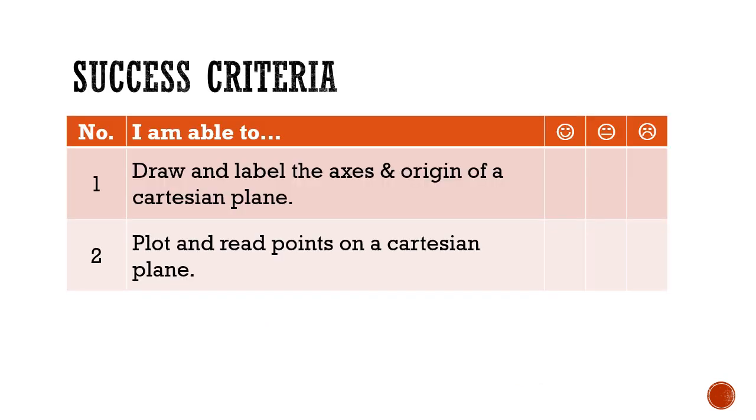Before we end today's lesson, let's check back against the success criteria that we've set up at the start of the lesson. Are you now able to draw and label the axis and origin of a given Cartesian plane? Are you able to plot and read points on a Cartesian plane?